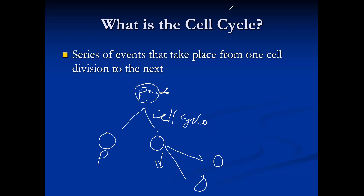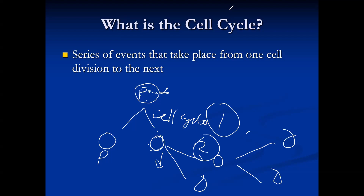The daughter cells also further divide, and the series of events taking place from one cell cycle to the next is what we call the cell cycle. This is one cell cycle, this is another, and if this one divides again to produce more, that is the third cell cycle. So the series of events from one cell cycle to the next is what we call the cell cycle.